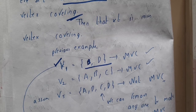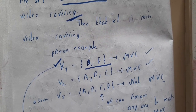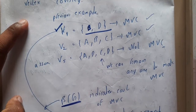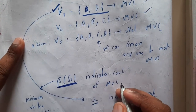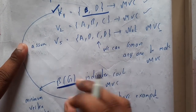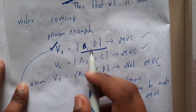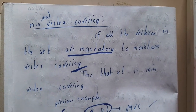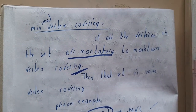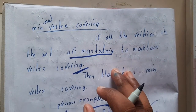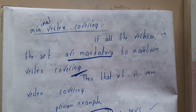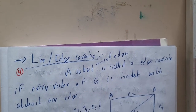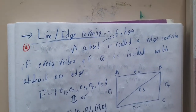You might wonder if there is a formula to find the number of vertices in a minimal vertex covering — you need to identify it by observation. It is represented as β(G), which stores the minimum size of a minimal vertex covering. In this example, the minimal vertex covering value β(G) is 2. To summarize: in vertex covering, you select some vertices and check whether they are connected to all edges — that's the core logic. In the next lecture we will go through line covering or edge covering.